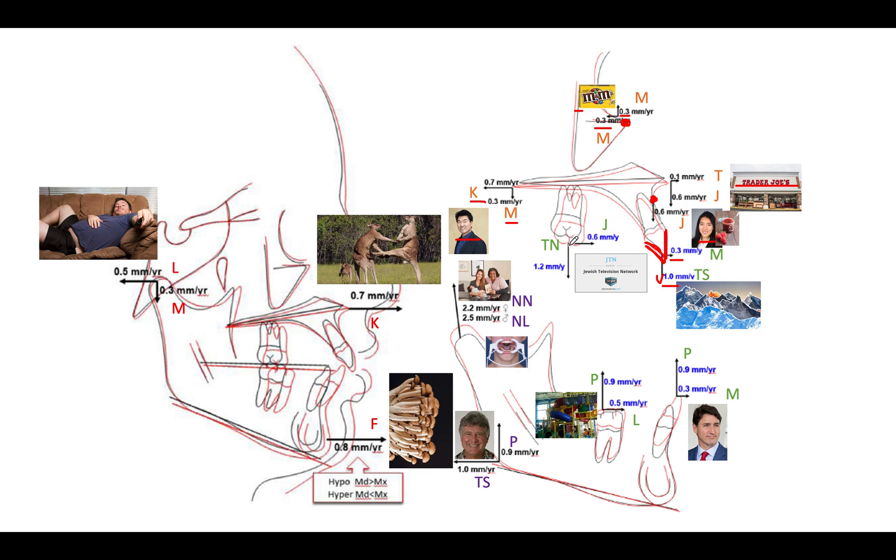So you can imagine that. And then the molar actually grows, goes forward 0.6 millimeters and then erupts 1.2 millimeters per year. And so it's JTN. So what came up when I put in JTN in Google? Jewish television network. So you can imagine like a TV on the upper six and it's of Jewish people and how their days are going, JTN.